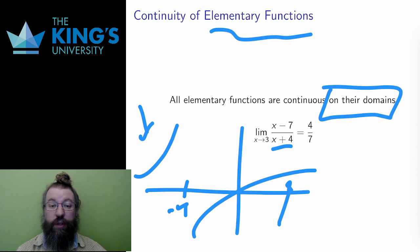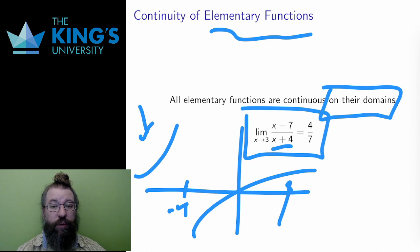Continuity is implicitly used in the first step of the limit evaluation procedure I talked about in the previous two videos. If an elementary function has no domain restrictions at a point, then the limit is just the value. That was the first thing to check in the limit process. The property that allows this, that says that the limit is just the function value, is continuity. The function x minus 7 over x plus 4 is continuous at 3, since 3 is in its domain, so the limit of this function is just its value, 4 over 7.